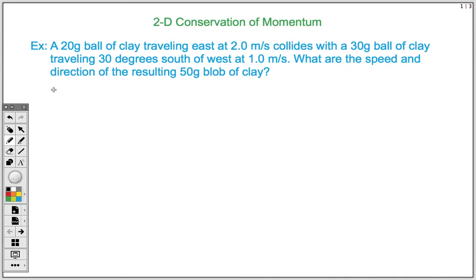So our problem that we're going to be covering today: we have a 20-gram ball of clay traveling east at 2 meters per second. It collides with a 30-gram ball of clay traveling 30 degrees south of west at 1 meter per second. We want to know what are the speed and direction of the resulting 50-gram blob of clay. This implies that this is an inelastic collision. The two objects are going to come together and form one object.